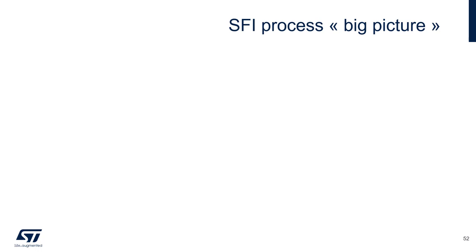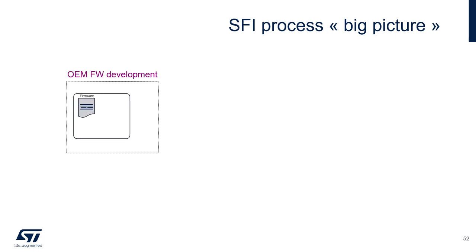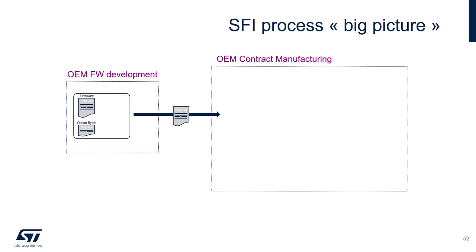Let's give an overview of this SFI mechanism, starting with the standard non-secure production. You have your firmware to download on the target, usually an .exe file or just a binary. You also probably need to define the option bytes to set up on the target, at least to close the device using RDP level 1 or RDP level 2. Then you need to send this data to your contract manufacturer, who uses a programmer to flash the target chips.